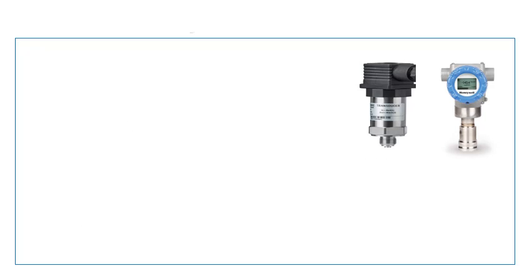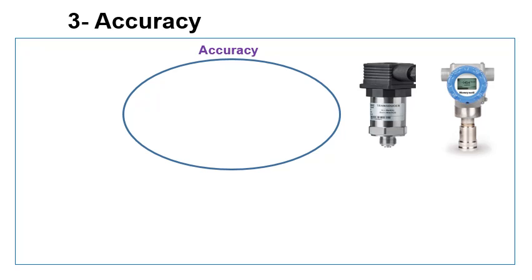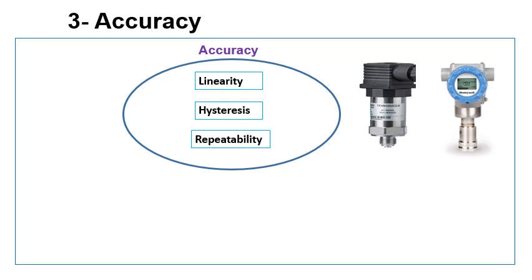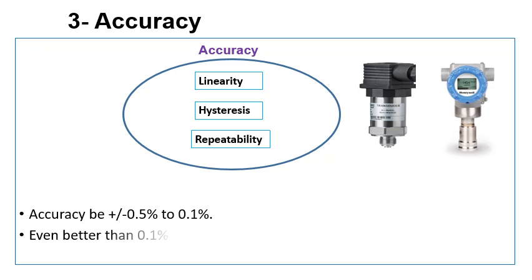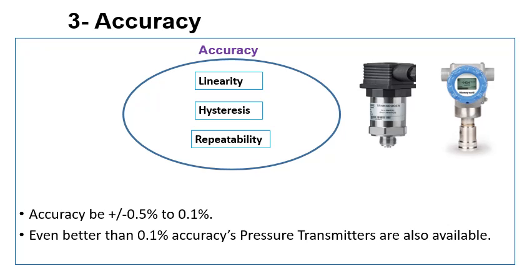The next parameter to be considered is accuracy, which is also a very critical parameter of a sensor. The accuracy of an instrument is the combined effect of its linearity, hysteresis, and repeatability, and can be found on the product specification sheet. The accuracy rating of a pressure transmitter may be plus or minus 0.5% to plus or minus 0.1%, with even better than 0.1% accuracy available. Make sure the accuracy of your instrument matches your process requirement.